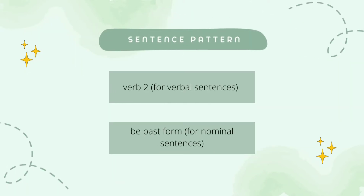To understand more about simple past tense, you can pay attention to patterns and examples of sentences. In this tense, the verb used is verb 2 for verbal sentences, and the be used is be past form for nominal sentences. Wait — verbal sentence and nominal sentence? What do you mean?